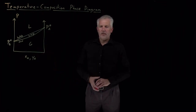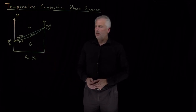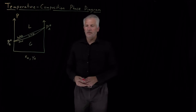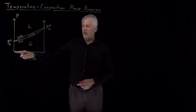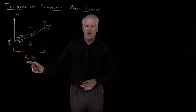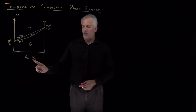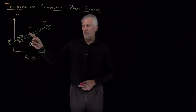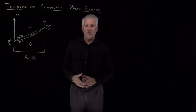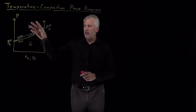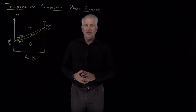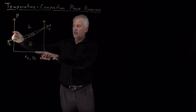This phase diagram is called a pressure-composition phase diagram, named after its axes. The vertical axis is pressure, and the horizontal axis is the composition of a solution — either mole fraction in the liquid phase or mole fraction in the vapor phase, depending on which of the two curves we're using. As with any phase diagram, we can use it to determine what phase a system will occupy if we prepare it at a particular pressure and composition.